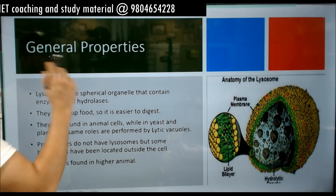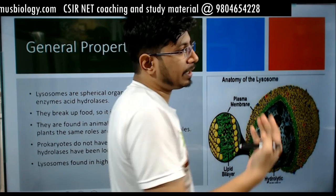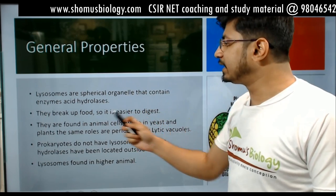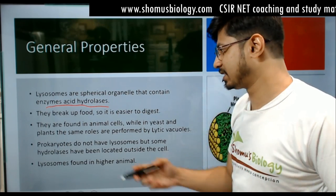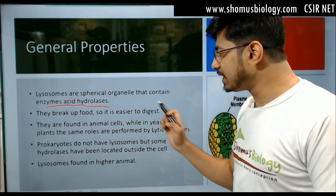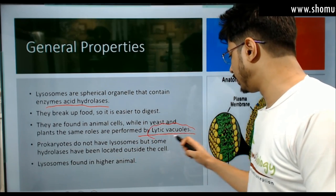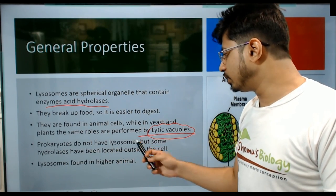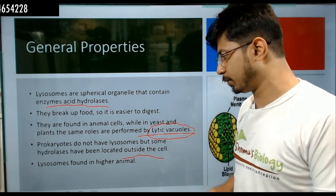What are the general properties of a lysosome? The lysosome is a spherical organelle that contains enzymes of acid hydrolysis — essentially hydrolytic enzyme-filled sacs that break up food so it is easier for the cell to digest. They are found in animal cells, while yeast and plants have lytic vacuoles performing similar roles. Prokaryotes do not have lysosomes, but some hydrolases have been located outside the cell in prokaryotes. Lysosomes are found in higher animals only.